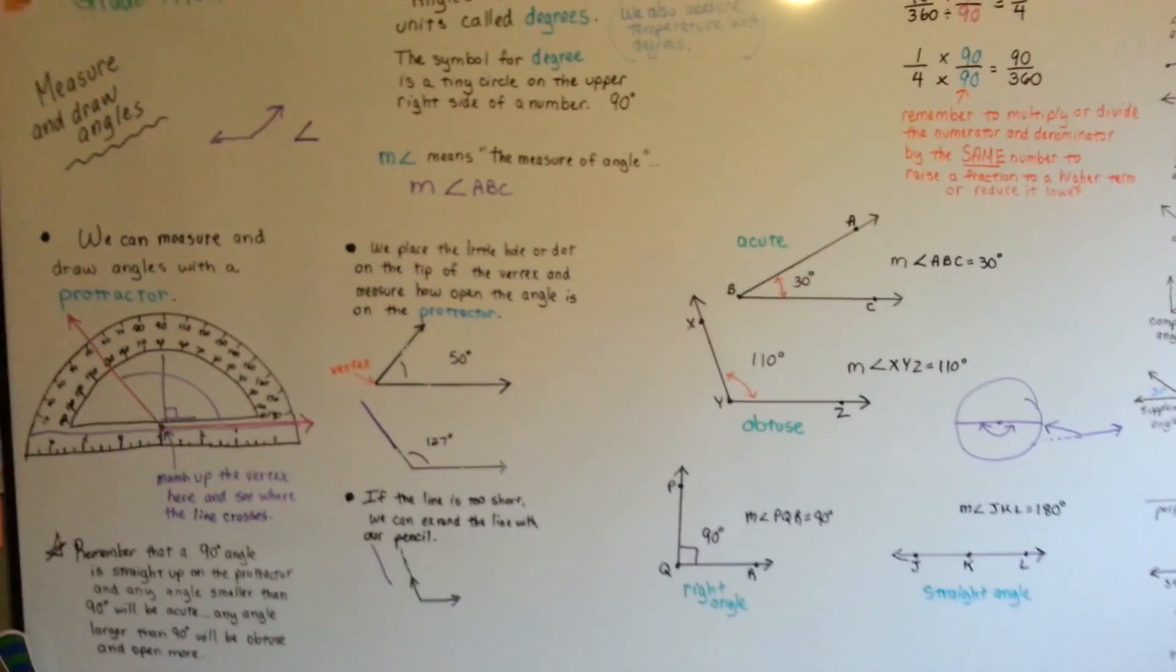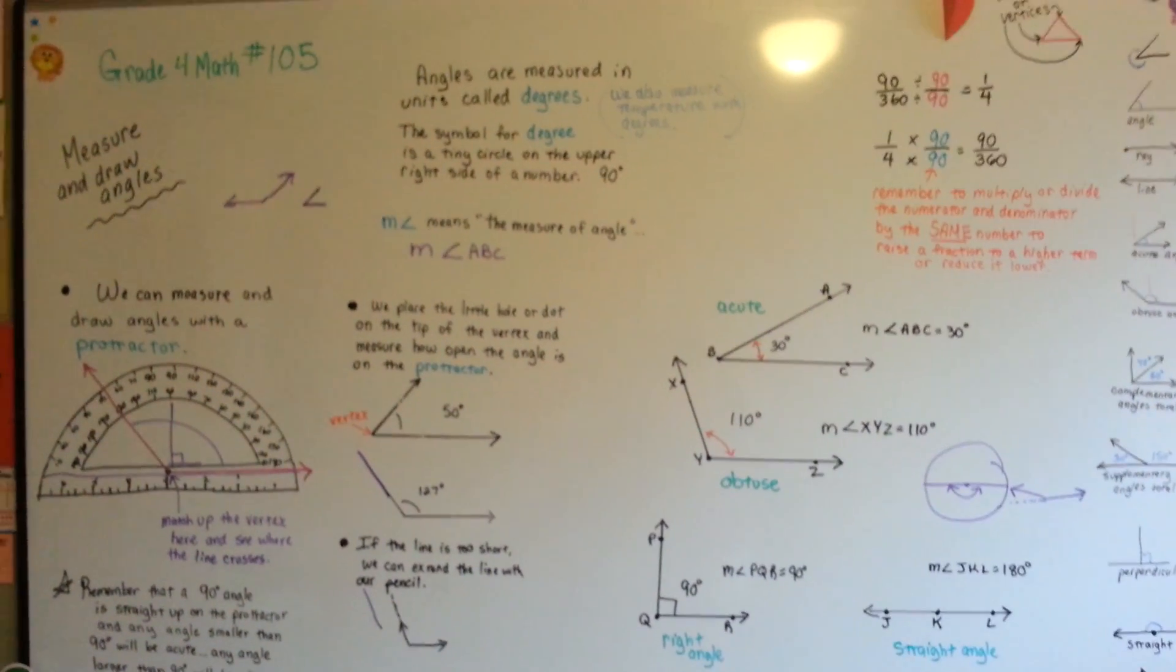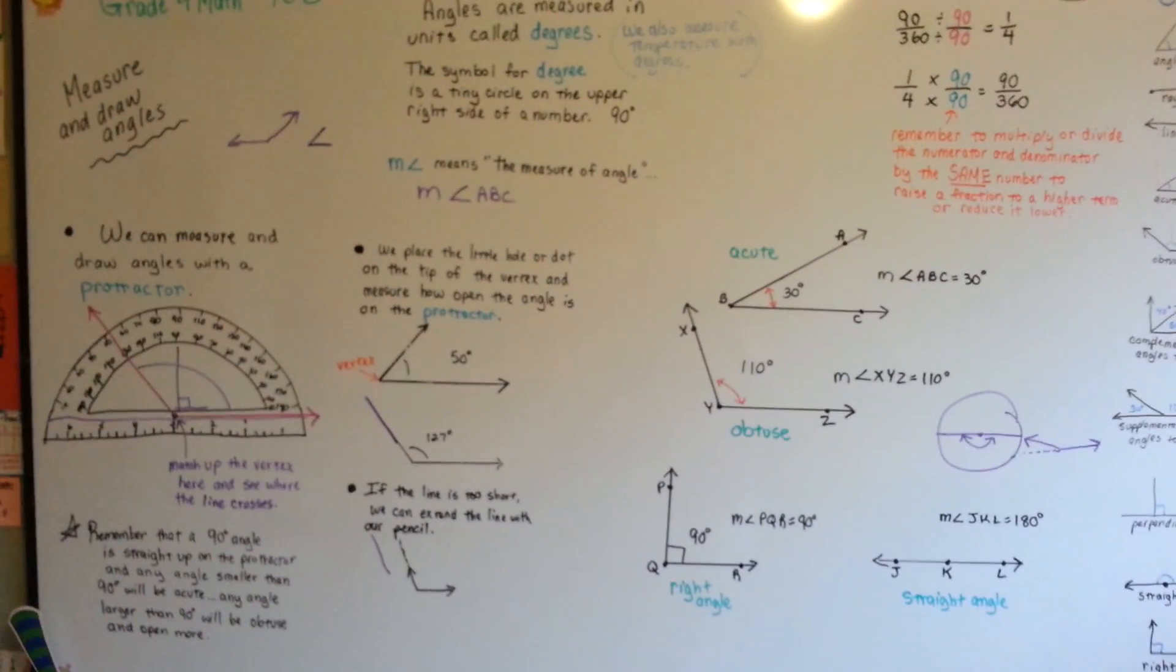That's measuring and drawing angles with a protractor. See if you can get yourself one. I bet they've got them at the dollar store. They're very inexpensive. I'll see you next video. Bye!